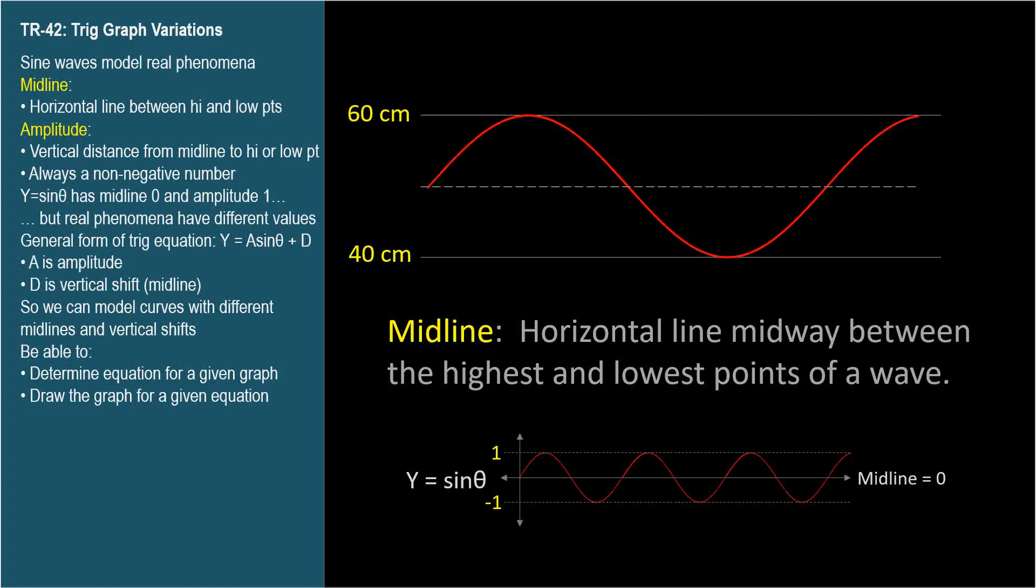Often we'll refer to the midline just as the y value, with the understanding that it's actually a line. So the midline is 0 means the midline is the line y equals 0, but it's never wrong to specify the midline as an equation. For the painted line, the highest point is 60 centimeters and the lowest point is 40 centimeters, so the midline is 50.